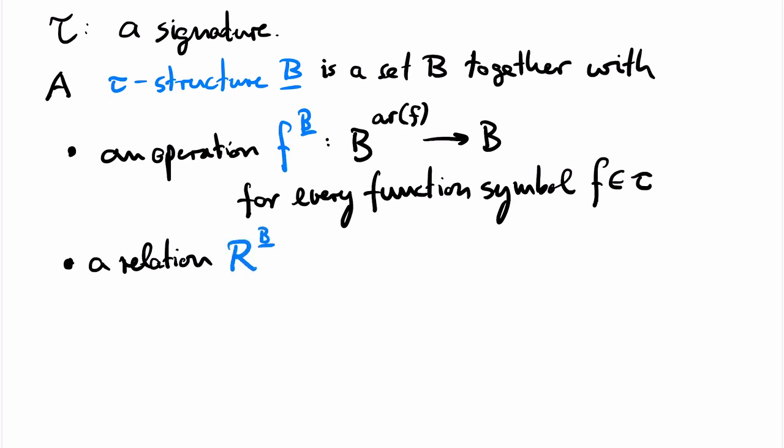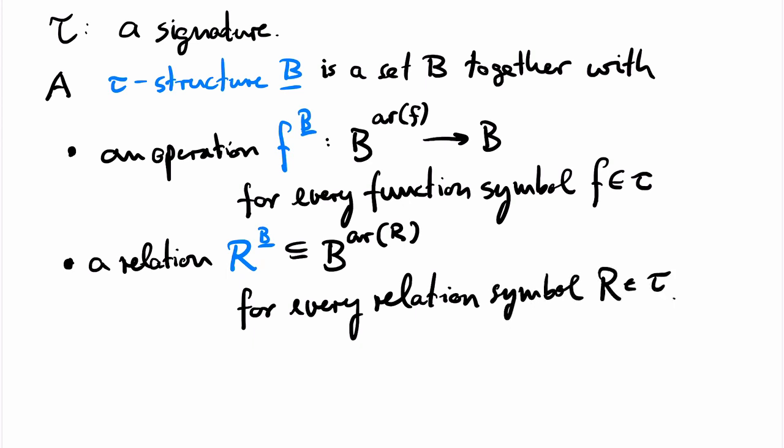Moreover, the structure carries for each relation symbol R in the signature a relation over B of the respective arity. Again, we write the structure into the superscript to distinguish between the relation symbol and the associated relation of the structure.